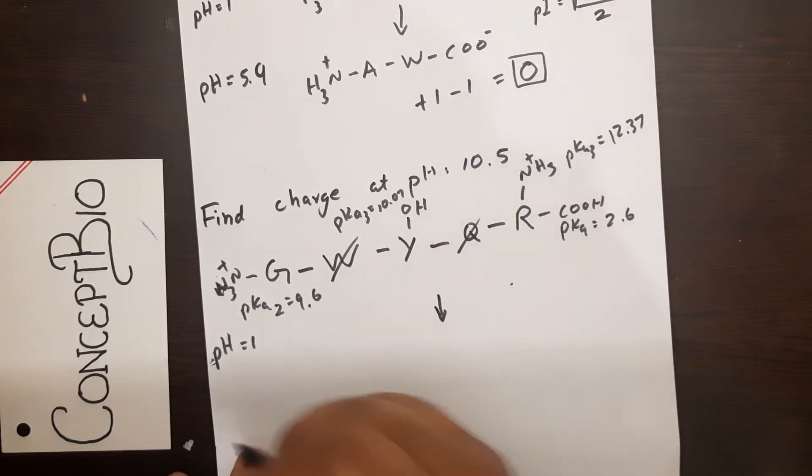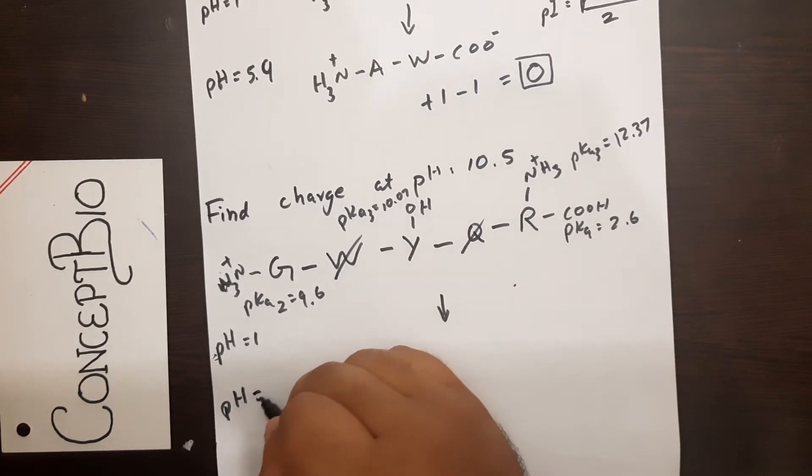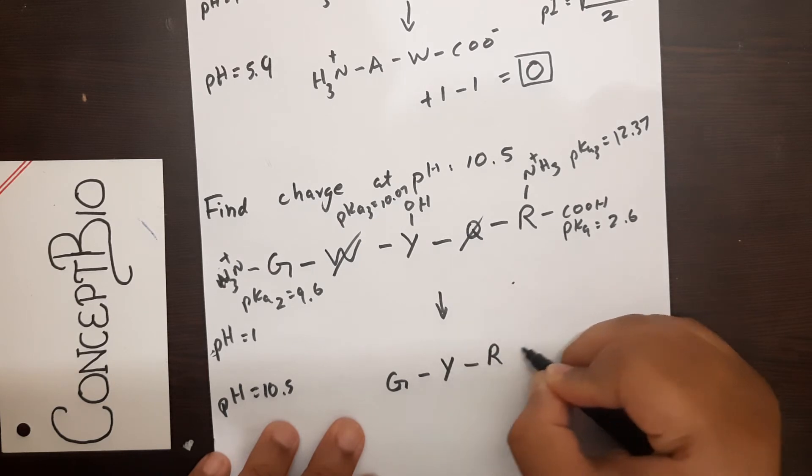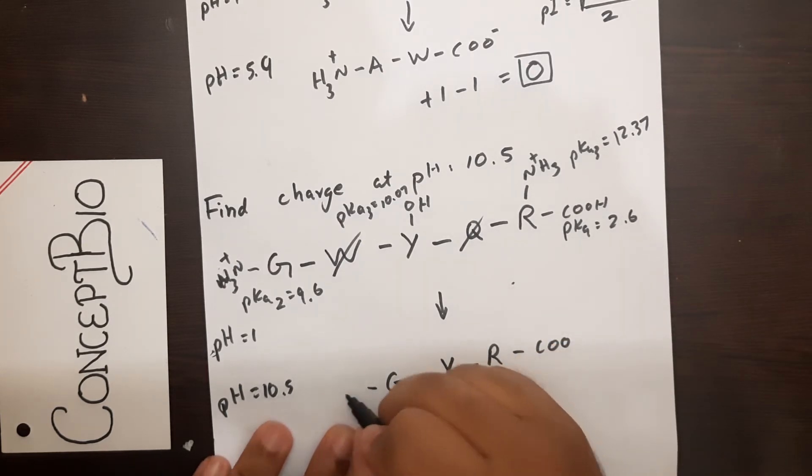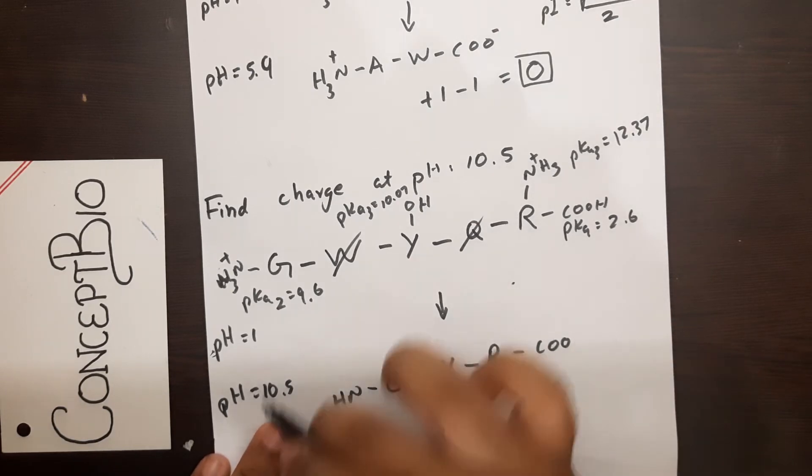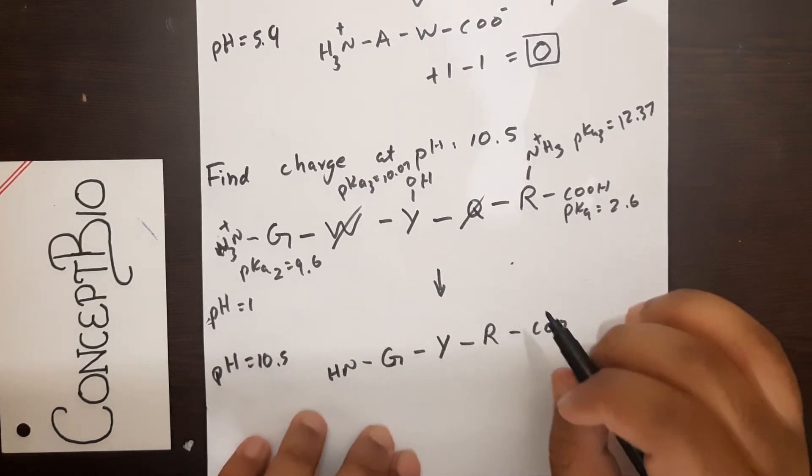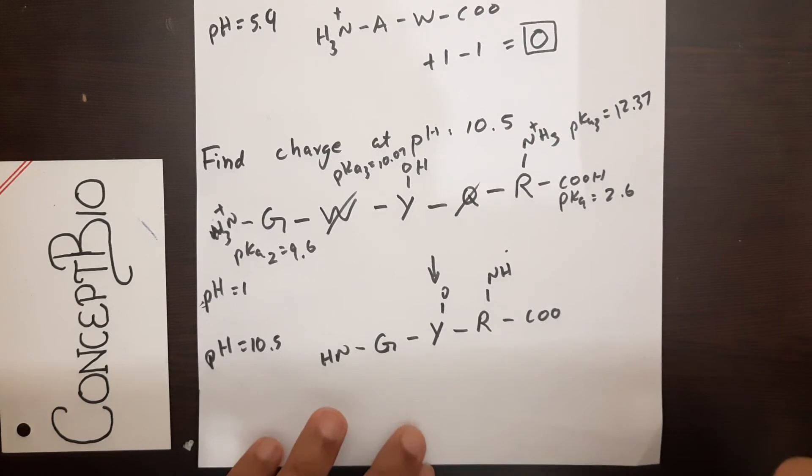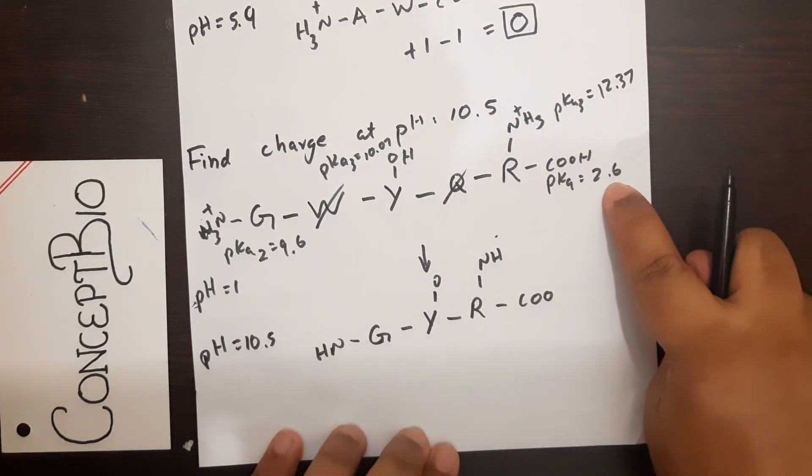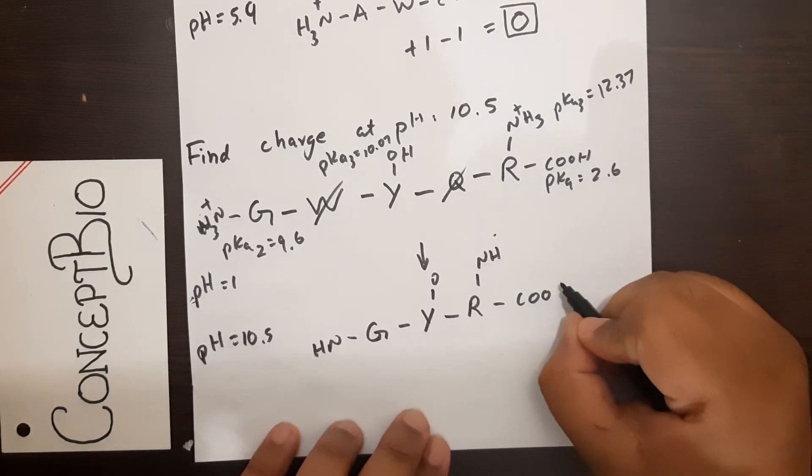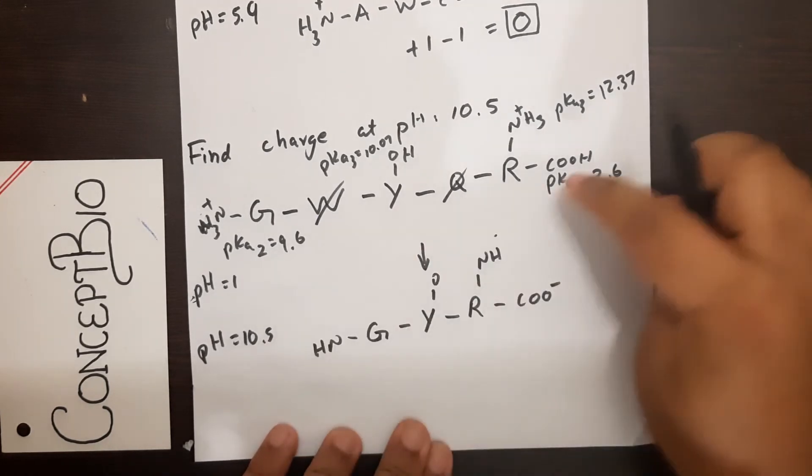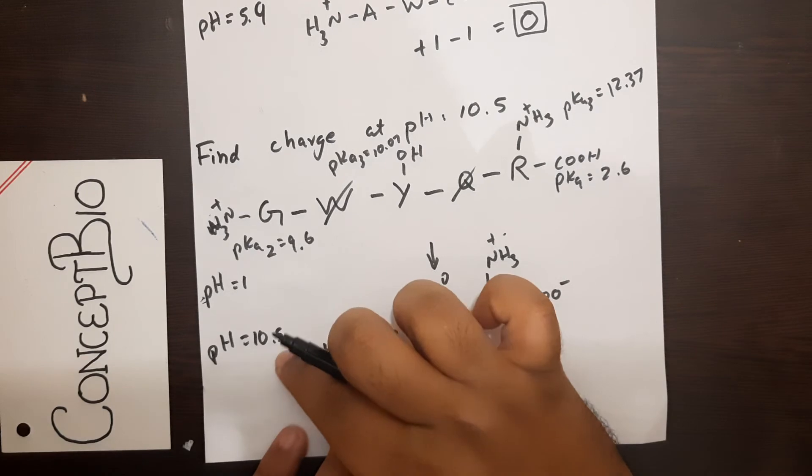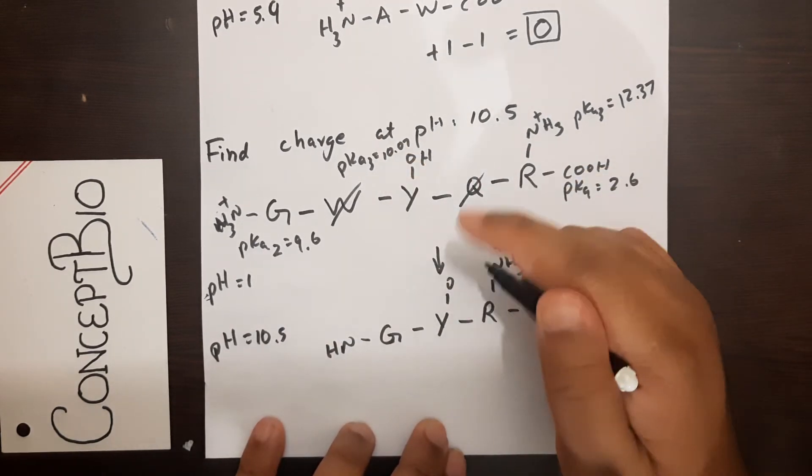Now if we increase our pH all the way to 10.5, what will happen? I will draw the structure: glycine, tyrosine, arginine, COO, NH, O, NH. I don't know what structure it will be yet—protonated or deprotonated—that's why I'm waiting. Now let's look: is 10.5 less or greater than 2.6? It is way greater, therefore deprotonation: COO minus. Is 10.5 less or greater than 12.37? It is less, therefore protonation: NH3 plus.